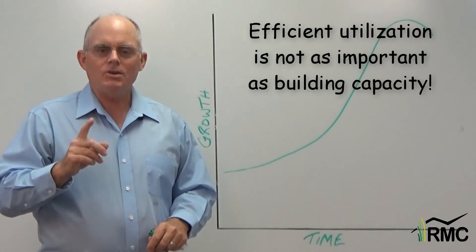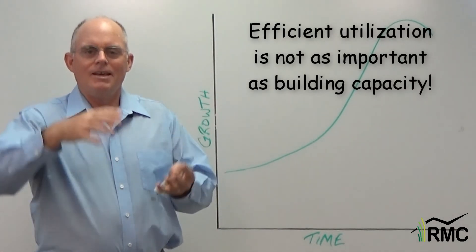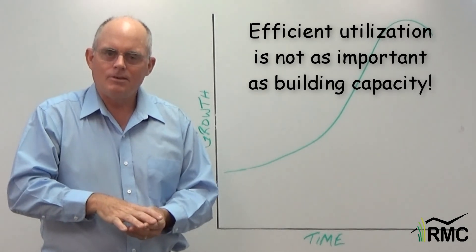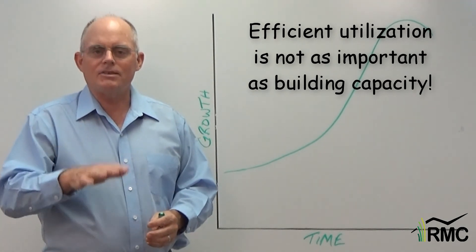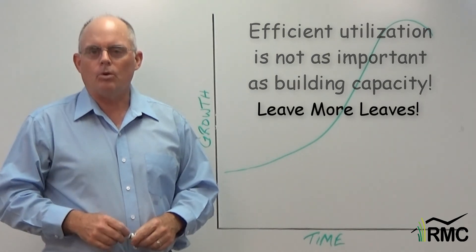Profit-minded ranchers are much more concerned with building capacity than they are with utilization. They know that to build more capacity they may need to graze less severely and leave more leaves.